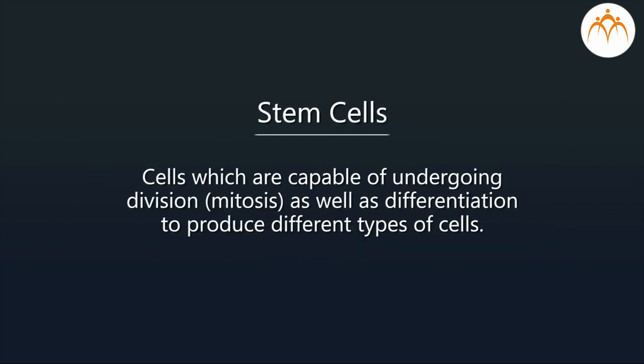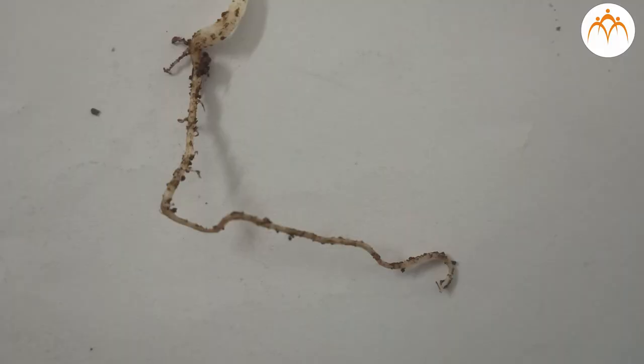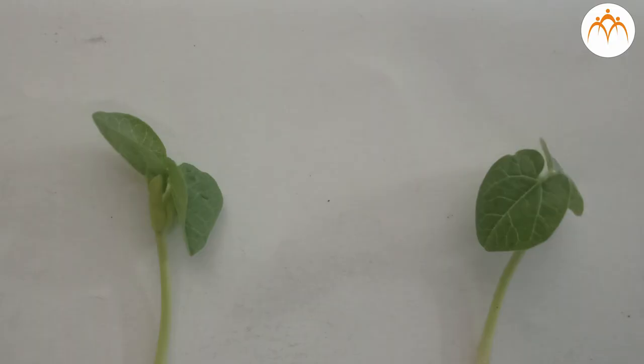The cells which are capable of undergoing division or mitosis as well as differentiation to produce different types of cells are termed as stem cells. Thus, the sprout formed in the germinating seed contains many stem cells which later differentiate to produce cells of different types in structures like root, stem, and leaves of the growing young plant.